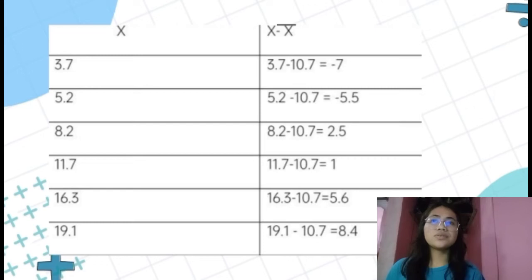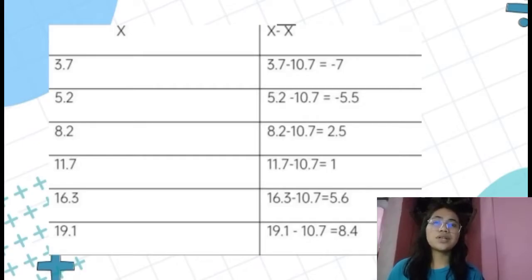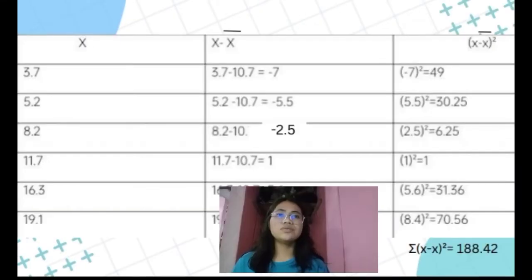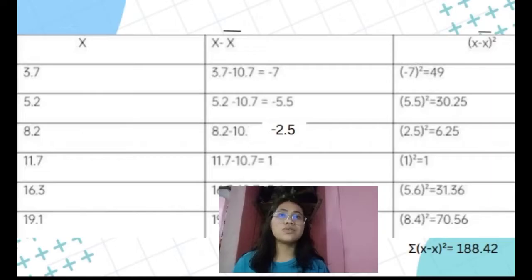The first column is our given value, x. The second column is x minus x-bar — we subtract our mean from each given value to get the answers. The third column is x minus x-bar, raised to the power of 2, meaning squared. The answers from the second column are squared in the third column.